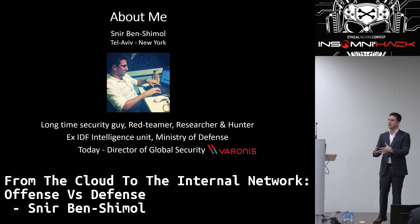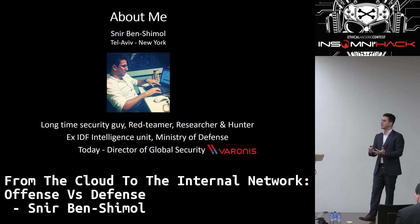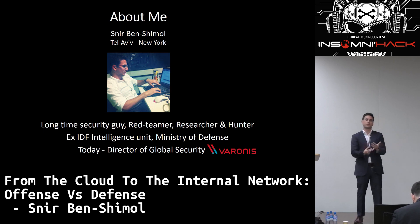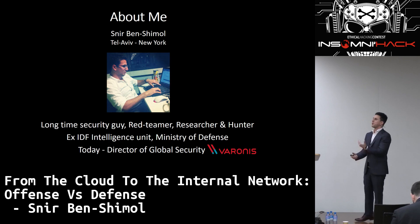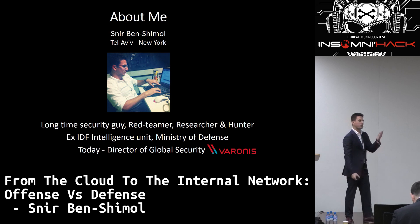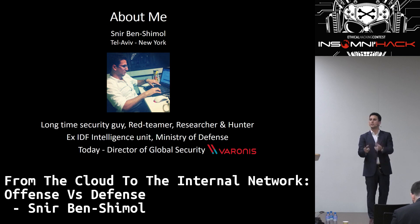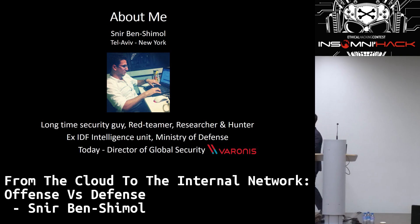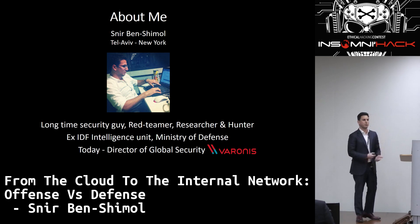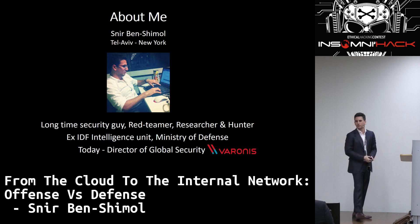Today we're going to talk about what's going on in the external perimeter — a little bit about cloud, a little bit about VPN, how organizations allow external entities (users, services, supply chain, third parties, vendors) to access the network. What are the risks we're seeing day-to-day, and what tools you can use for better detection for your blue team and SOC team. We'll have about 30 minutes of session and more than 5-10 minutes for Q&A.